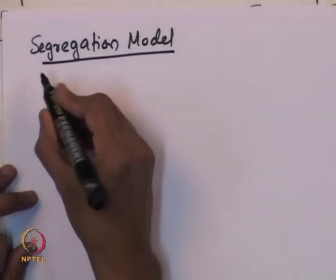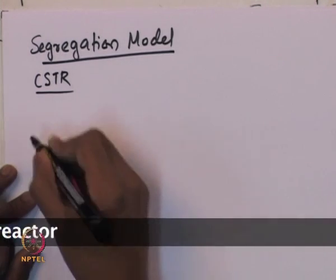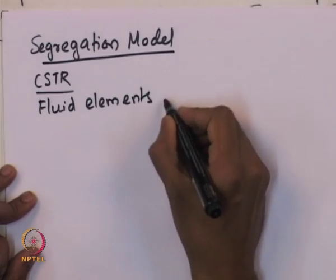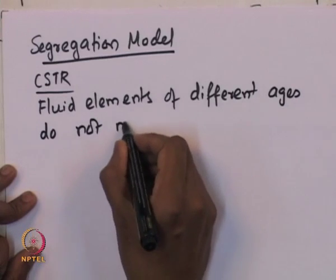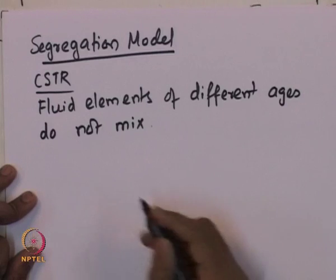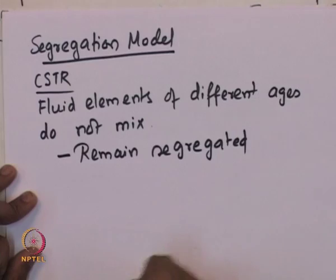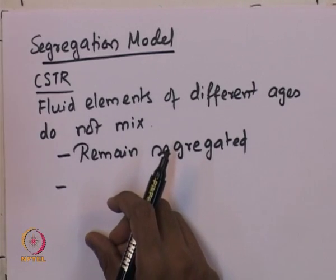Let us consider a CSTR, or any reactor, and assume that the fluid elements of different ages do not mix. That is the segregation model, which means they remain segregated throughout. The flow is essentially like a series of globules where one globule enters the reactor at a certain time, and another globule entering at a different time will have a different age. The globules of different ages do not mix with each other.